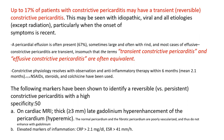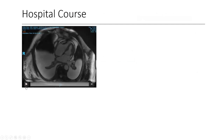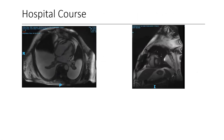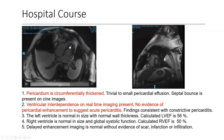We did MRI in this case to rule out transient inflammatory constriction, given the presence of effusion and what appeared to be an inflammatory mass on the pericardium. The MRI showed thick pericardium but no hyperemic late gadolinium enhancement. It is possible this patient started as transient inflammatory constrictive pericarditis but progressed to fibrotic pericardium due to lack of appropriate initial treatment.